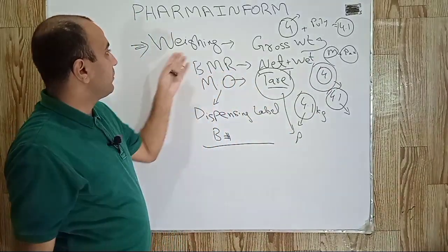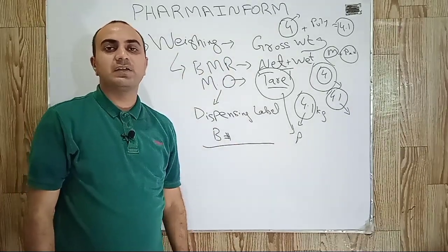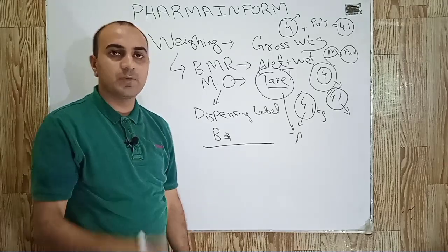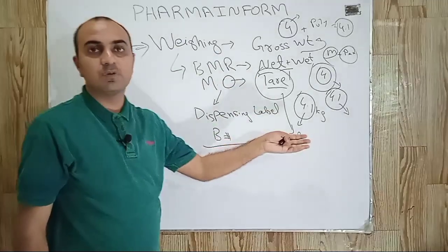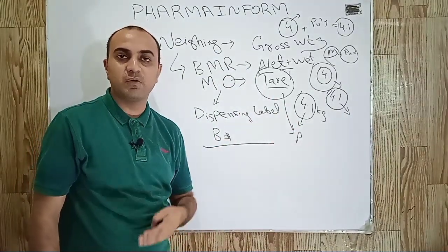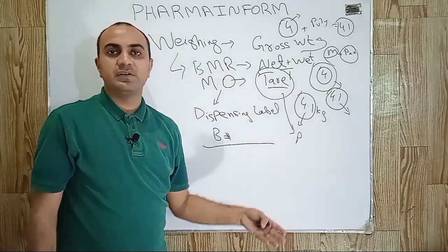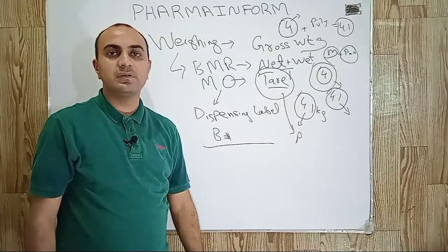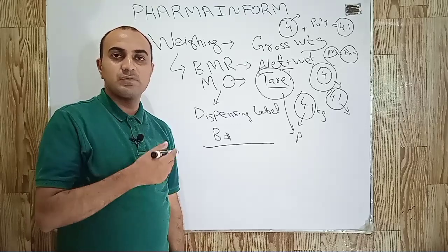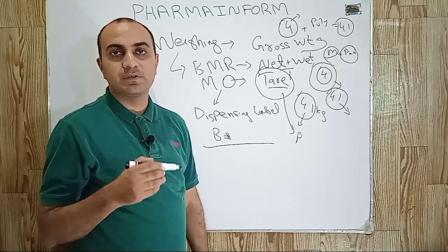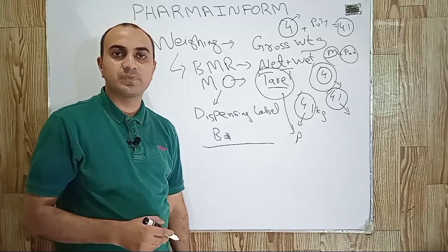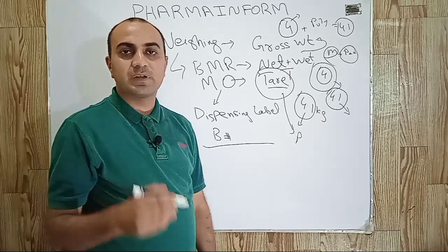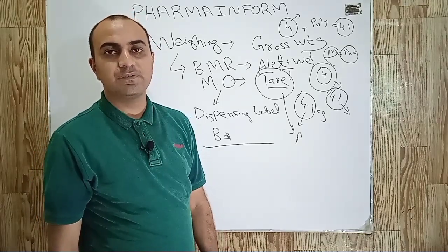I hope you can now understand the first step of wet granulation, which is weighing. If you have any confusion you can ask in the comments. In brief, weighing is the cross-checking of the quantities of materials used in the manufacturing operation and also verifies the batch number and lots of the material. In the next video we will discuss the next step of wet granulation, which is sieving. Please subscribe to our channel and share the video. Allah Hafiz.